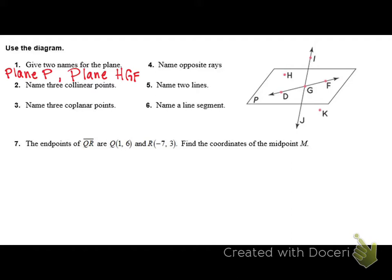Number two, we're going to name three collinear. What does collinear mean? Points on the same line. Good. So what are three points on the same line? D, G, and F. I will say that J is a point. It just doesn't have a dot for whatever reason. So if you want to draw one, it's supposed to be there. Number three, we're actually going to name all of the coplanar points. So what are all the points on the plane? Good. H, D, G, and F. Those are all the points that are on the plane. P is not a point.